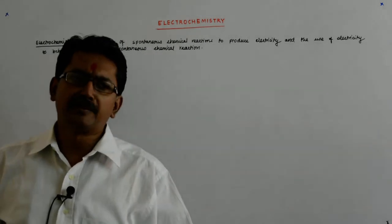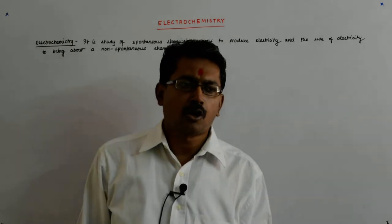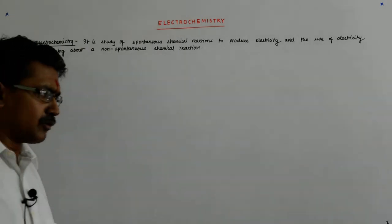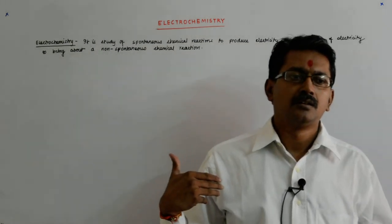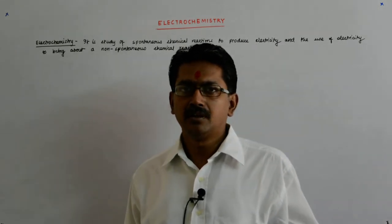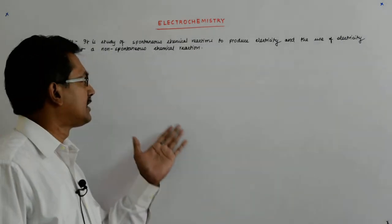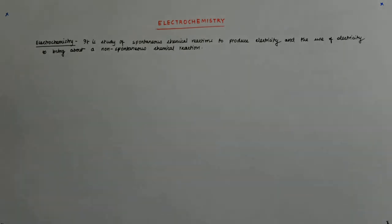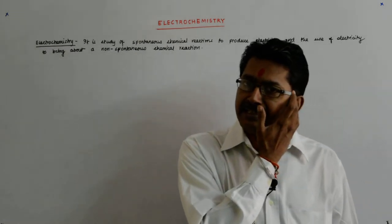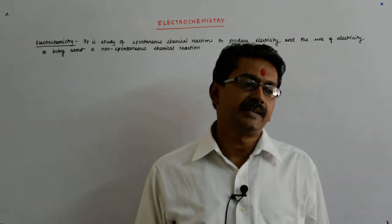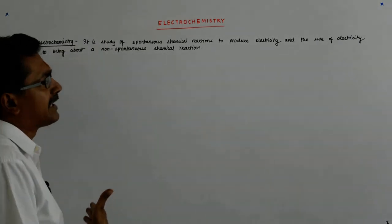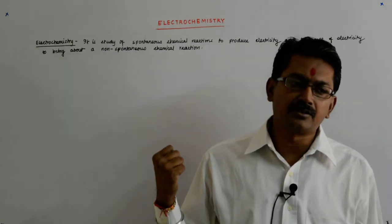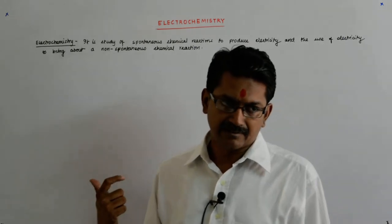We will soon see what these reactions mean. There are many other processes that come from electrochemistry, for example the widespread electroplating we see, which is due to an electrochemical reaction. Also, many highly reactive metals like sodium are extracted by the method of electrochemical reactions.